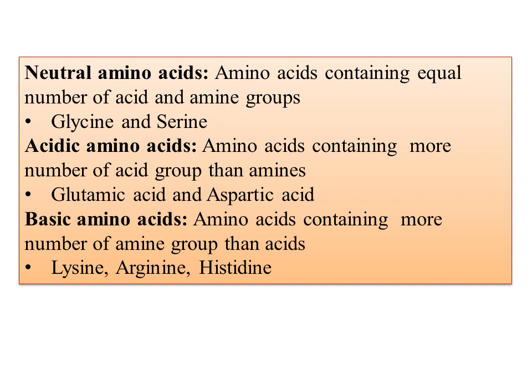The three categories are: neutral amino acids, acidic amino acids, and basic amino acids. Neutral amino acids — examples include glycine and serine. We identify them by the number of acid and basic groups. If the amino group is basic and the acid group is present, based on the number of acid and basic units, we classify them. Lysine is an example of a basic amino acid.